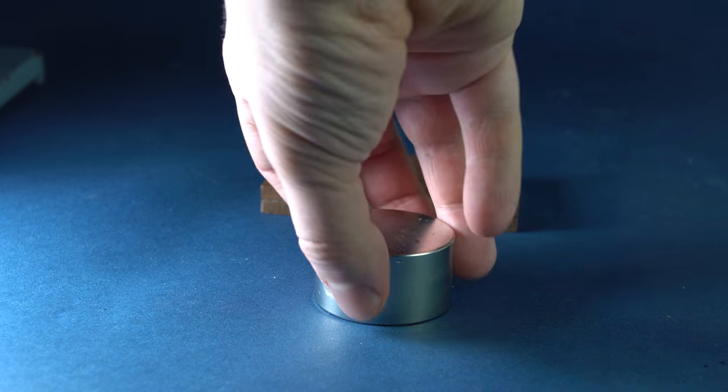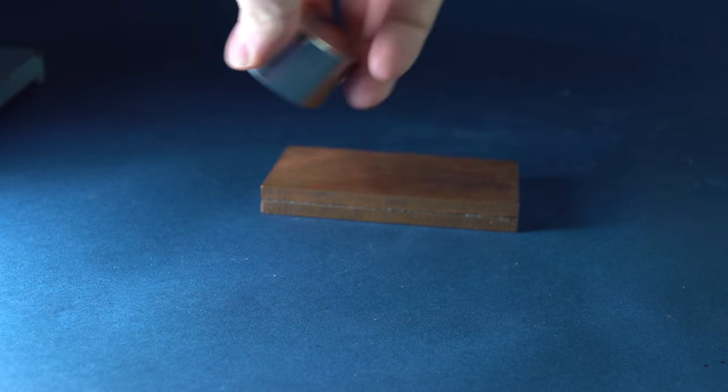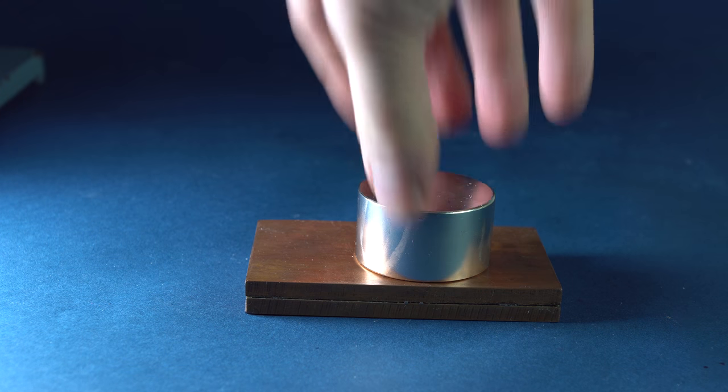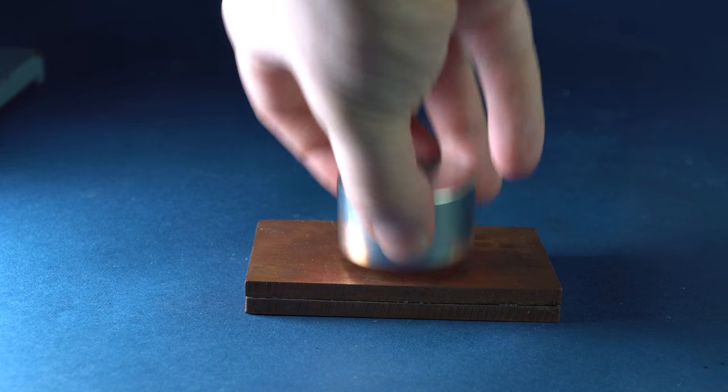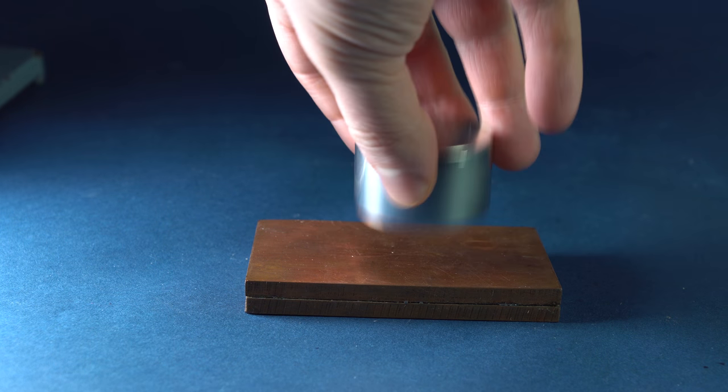Let's observe how a powerful neodymium magnet will drop onto the surface of the table. And now, let's compare with the fall of the magnet onto a copper plate. You can see that the magnet fell slower onto the copper plate.